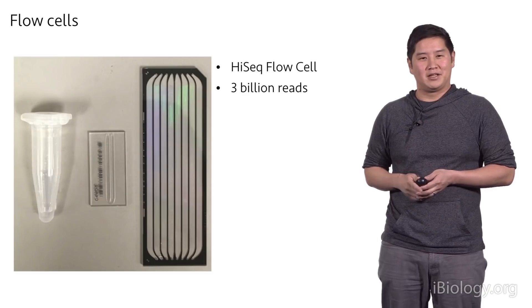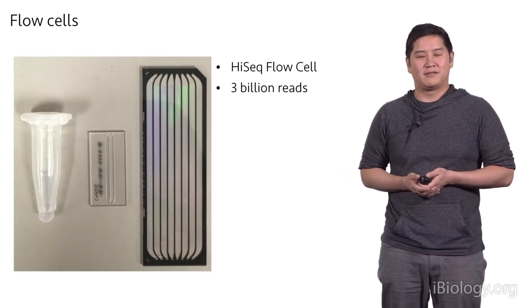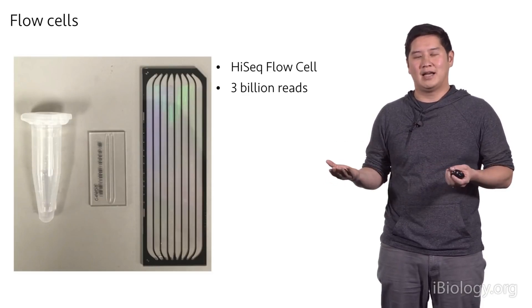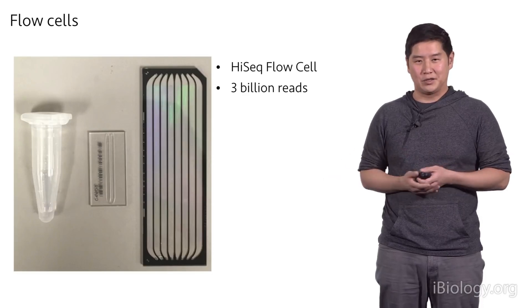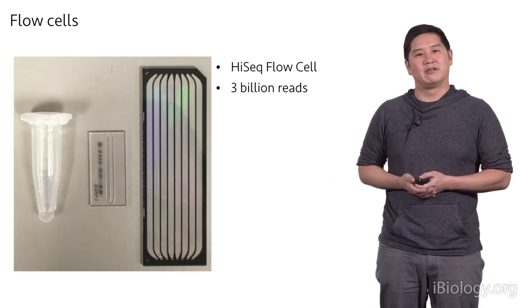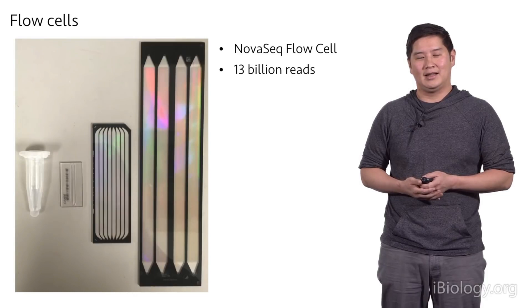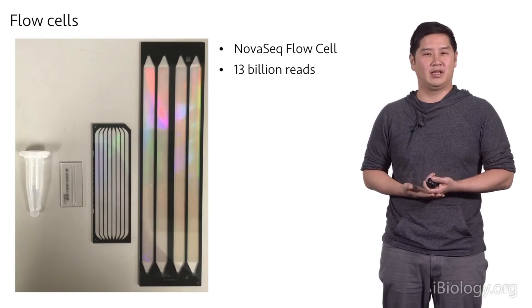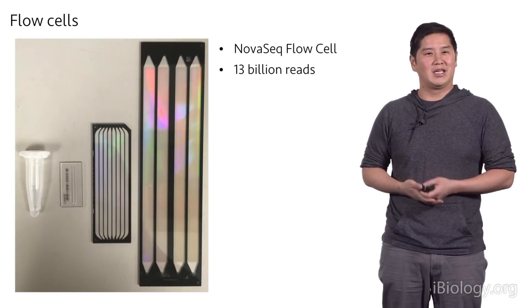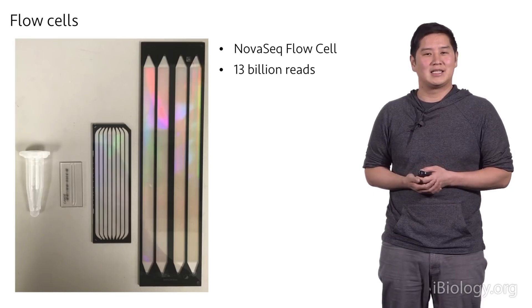Next up is the HiSeq flow cell. You can see it's quite a bit larger than the MySeq flow cell, and this larger real estate allows us to generate more reads in a single run, approaching three billion reads. And lastly is the NovaSeq flow cell, which is even larger. And on this flow cell, we can generate 13 billion reads in a single run.